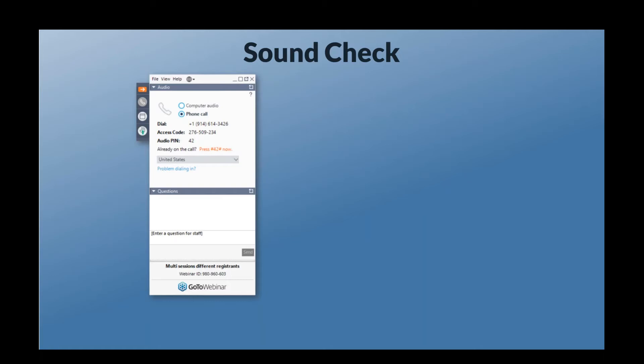On the screen in front of you, you should see a simple slide that says 'sound check.' There are two connections: a video connection so you can see my screen, and I'm also going to be sharing my webcam in a moment. After that, we'll be able to communicate using the question section. You're automatically muted on the microphone, but that does not mean I don't want to hear from you. I encourage interaction and questions so we can work through these strategies together live.